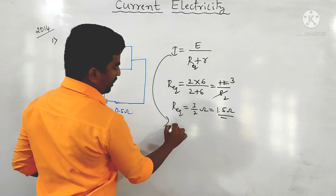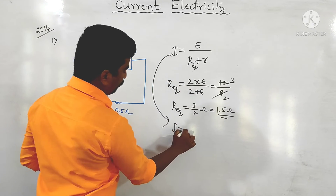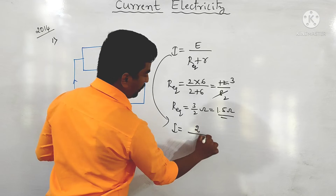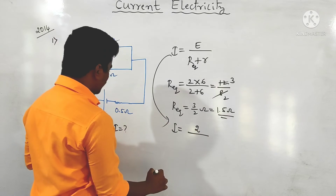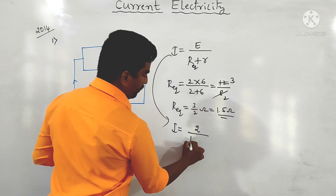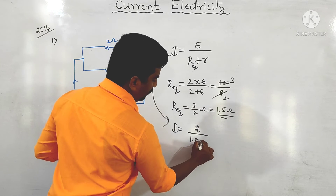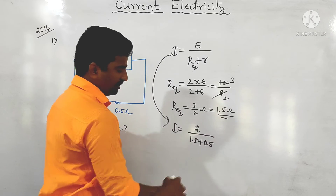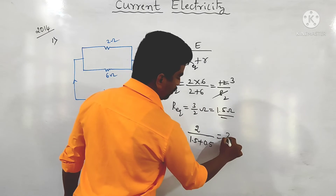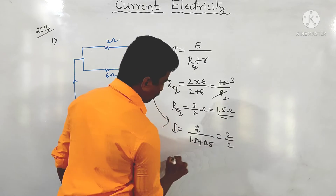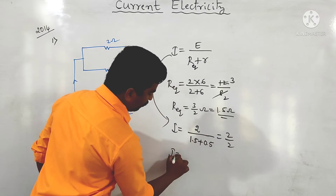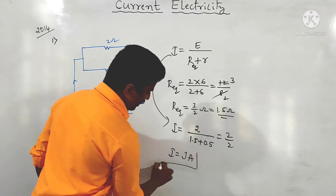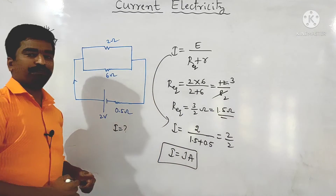Substituting into the formula: I = E / (R_eq + r) = 2 / (1.5 + 0.5) = 2 / 2 = 1 ampere. This is the answer for the given question.